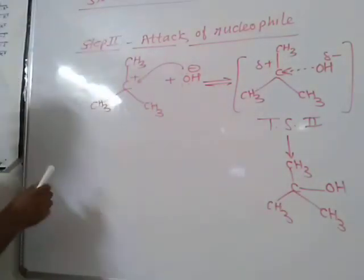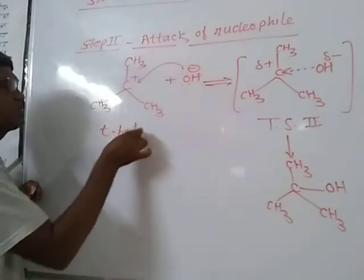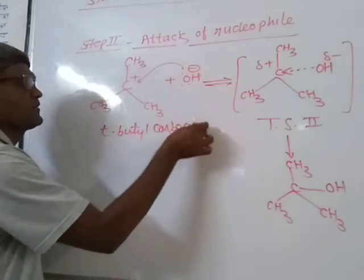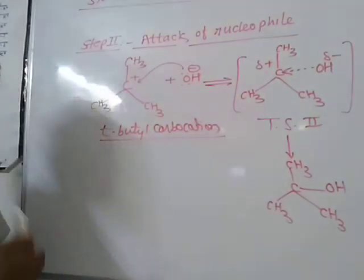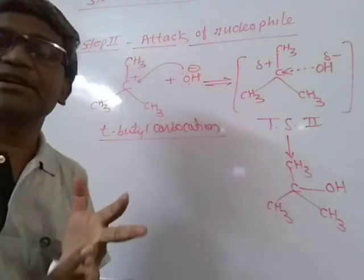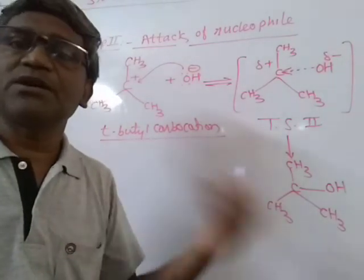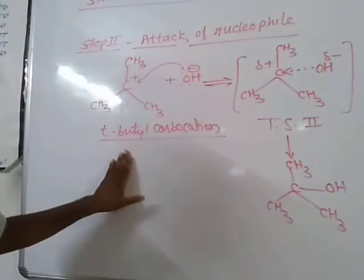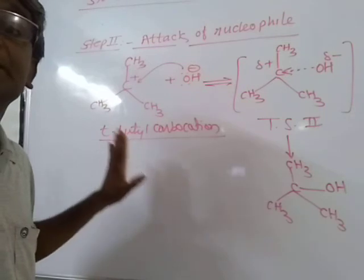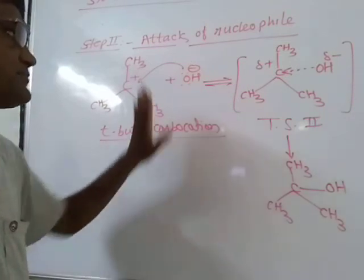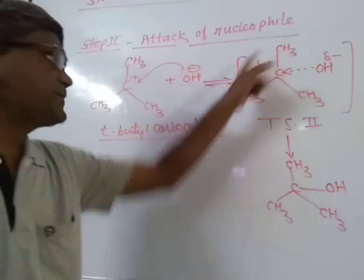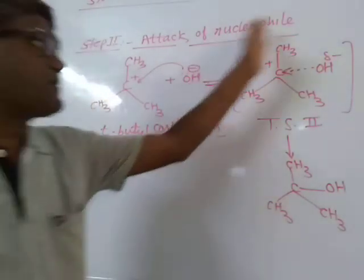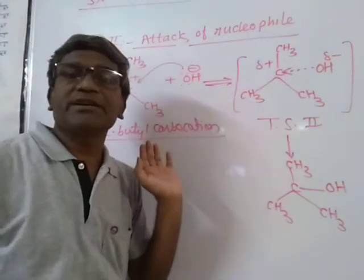The carbocation formed here is the tert-butyl carbocation. Regarding stability: primary carbocation, then secondary carbocation, then tertiary carbocation — and also benzylic carbocations are stable. Among all of these, the most stable is the tert-butyl carbocation. The three alkyl groups are in a single plane at 120° to each other — so this is a planar arrangement.